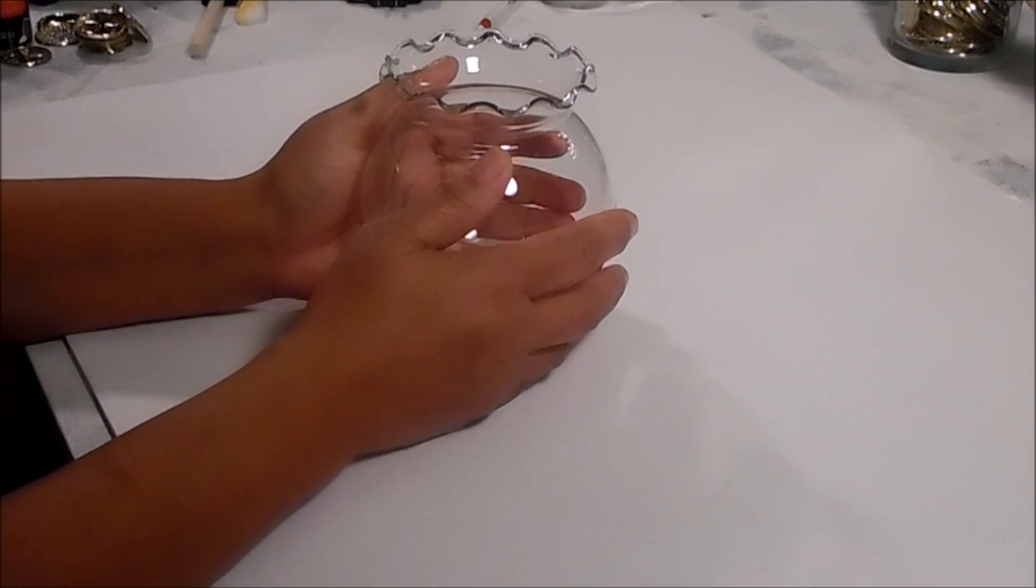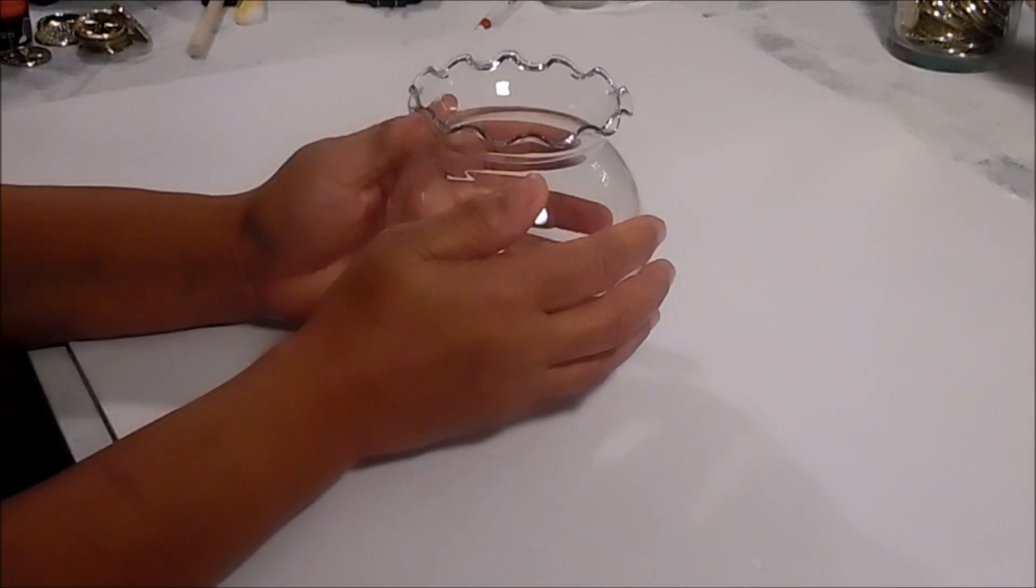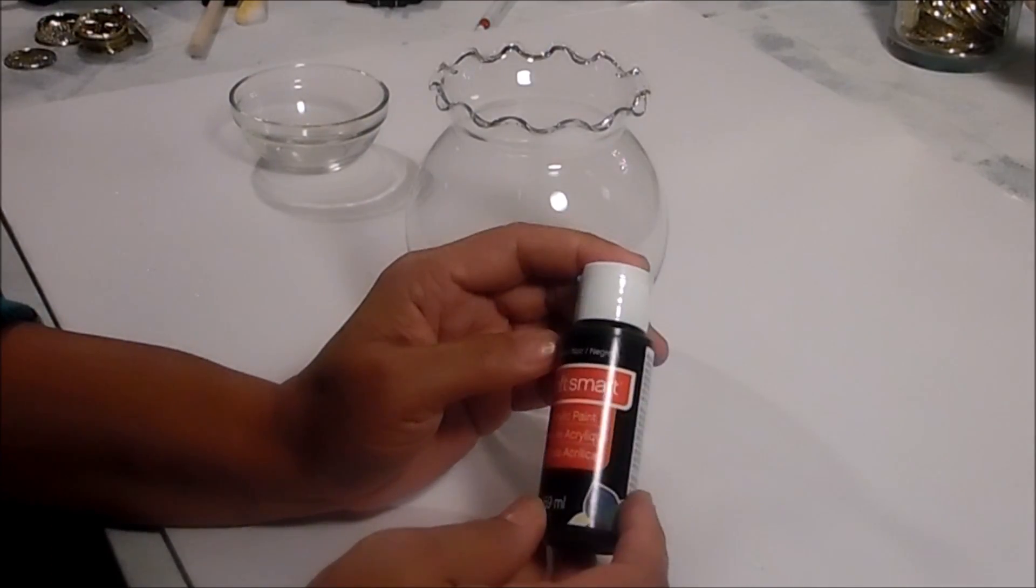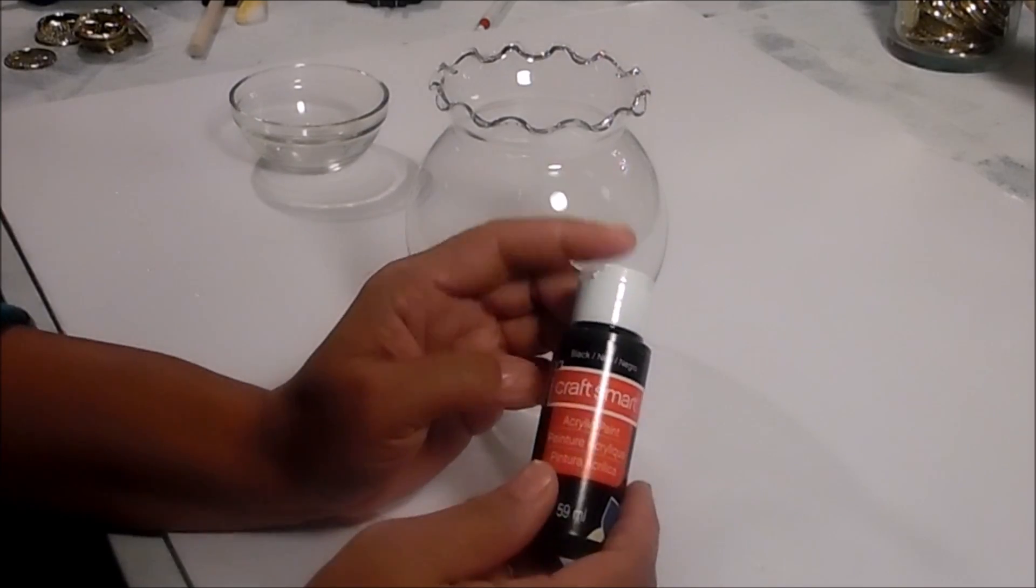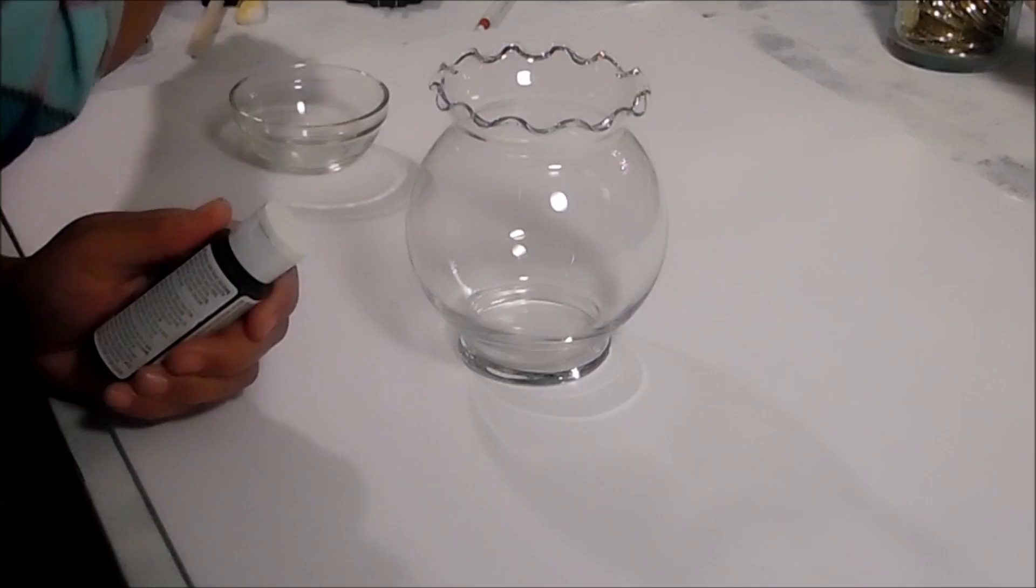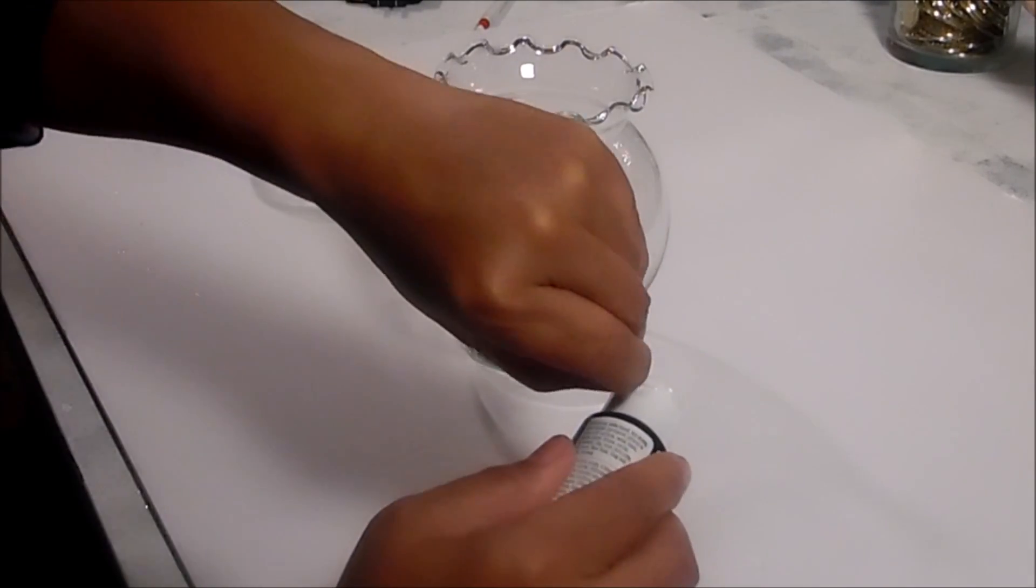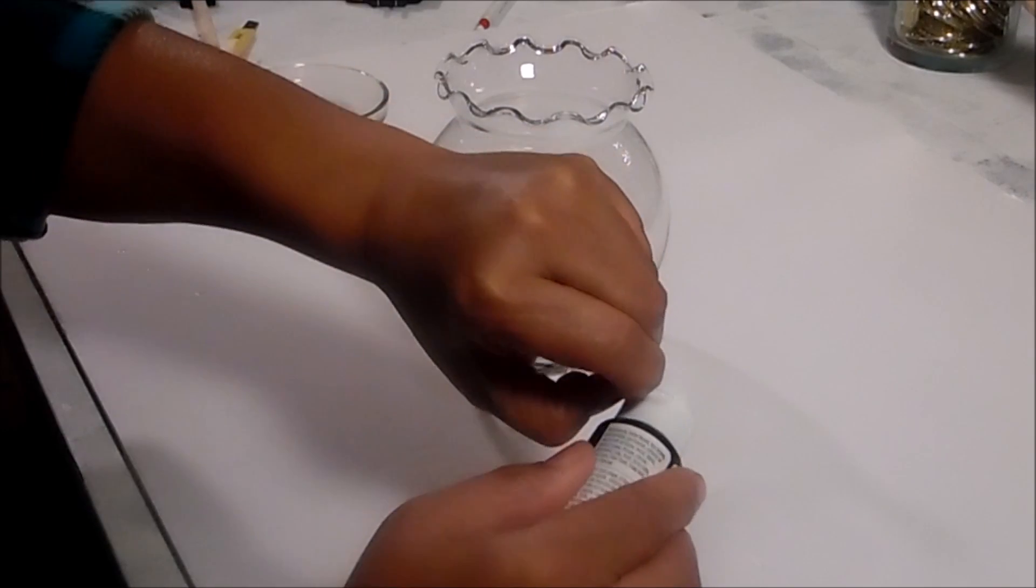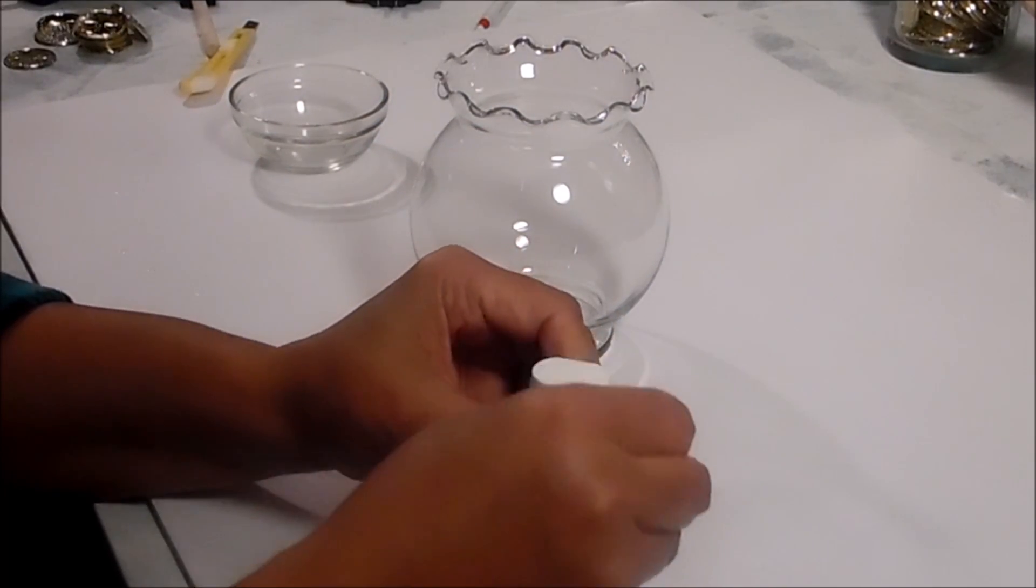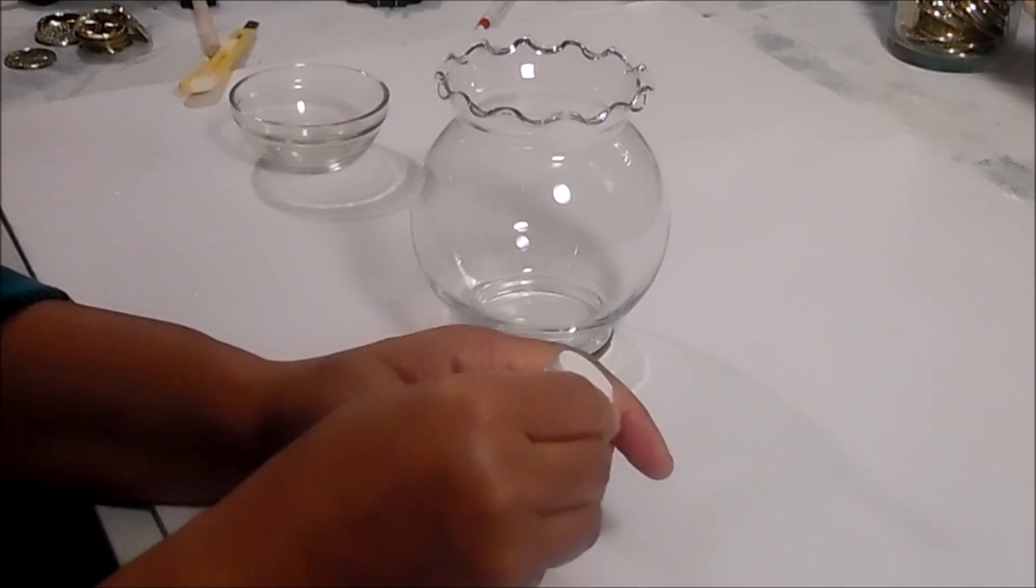So what I want to do is start out by painting this black. I have some Craftsmart acrylic paint and I picked this up at Michael's. It's less than a dollar and I think this is flat paint. I'm not sure, but it's up to you if you want to use flat or if you want to use gloss.